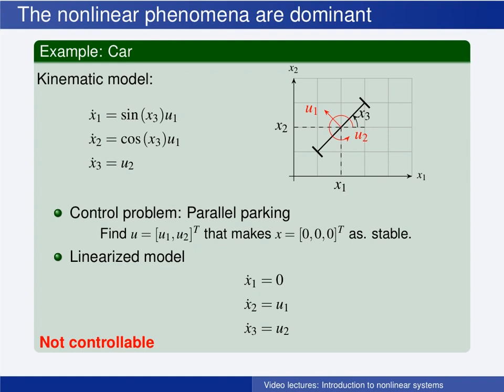The control problem is parallel parking. We want all the X variables to go to zero. This corresponds to the car being parked here, at the origin, with a zero rotation with respect to the X1 axis. So the car is positioned like this.